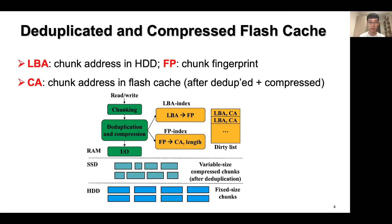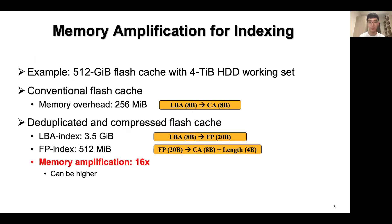To read a chunk from the system, we first look up the LBA index to find the FP given its LBA. Then, given the FP, we try to find the CA of the chunk in the FP index. If such a CA is found, we read the chunk from the cache. To perform deduplication, we look up the FP index for a match. If the FP exists, then the chunk is a duplicate. To write a unique chunk after deduplication, we first write the original chunk into the HDD if the cache adopts a write-through policy. Then, we compress the chunk and write it to the SSD cache.